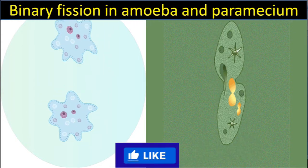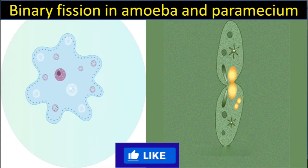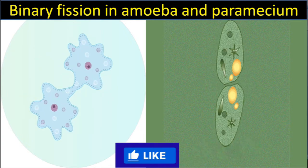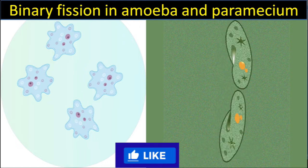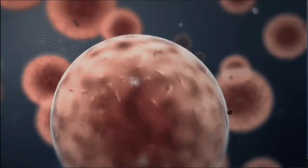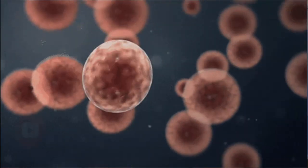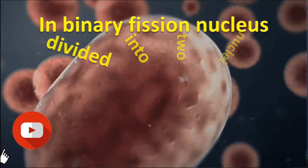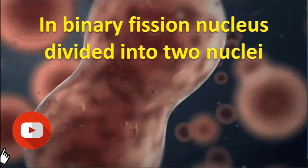The process of asexual reproduction in which the nucleus divides into two daughter nuclei is called binary fission. Binary fission occurs in amoeba and paramecium. In binary fission, the nucleus divides into two daughter nuclei.